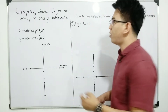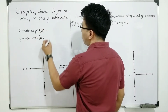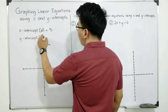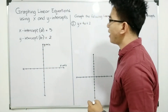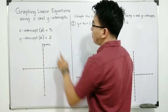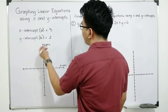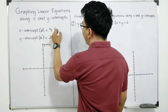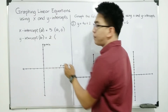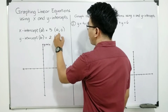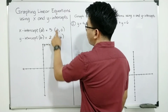For you to understand more about the x and y intercept, let's say for example I will give you an x-intercept which is 5, and a y-intercept which is 2. In this case, your x-intercept is actually a point, therefore it has coordinates. The coordinates of an x-intercept are represented by (A, 0), while your y-intercept is represented by (0, B). So we can replace A by 5, because your x-intercept is 5.